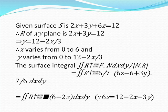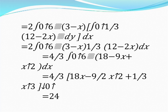On simplification, this equals the integral from 0 to 6, with y varying from 0 to (12 minus 2x)/3, of (6 minus 2x) dy dx. Further simplification gives (4/3) times the integral from 0 to 6 of (18 minus 9x plus x²) dx. Integrating with respect to x gives 18x minus (9/2)x² plus (1/3)x³, evaluated with x from 0 to 3, yielding the final value of the surface integral.